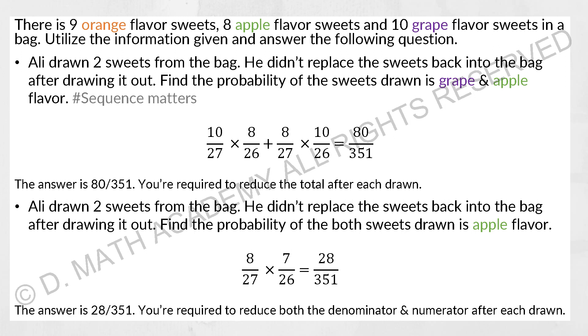So for the next question, it's the same thing but there is some information added in, which is Ali drawn two sweets from the bag and he didn't replace the sweet back into the bag after drawing it out. Find the probability of the sweet drawn is grape and apple. So the same thing, it can be grape followed by apple, or apple first followed by grape. For the first one I use grape first, so 10 over 27. Since I took out one grape from it, the total now decreased to 26. So the next apple probability will be 8 over 26. So for the next condition where I draw apple first, it will be 8 over 27 being multiplied by 10 over 26, and your final result is 80 over 351.